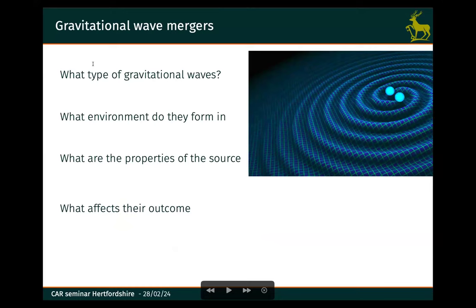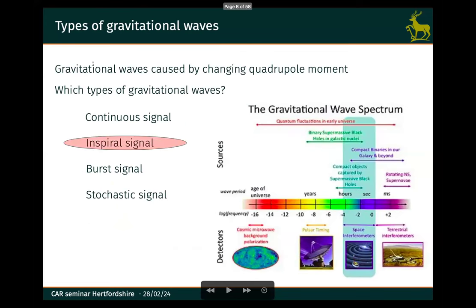I'm talking about gravitational wave mergers — there's a whole bunch of different types. They originate in different environments, can probe different properties of the source, and are affected by many physical processes. I'm specifically going to look at the in-spiral wave signal. There's a large spectrum of gravitational waves, and we're really just at the start of an era of gravitational wave observations. The relatively easiest one to observe is the in-spiral phase. That is right at the interface of terrestrial and space interferometers. The LISA project has been given the green light, and will be launched in a decade or so — a space interferometer giving us access to a whole new parameter space and mass range.